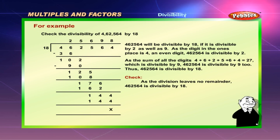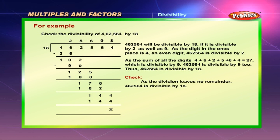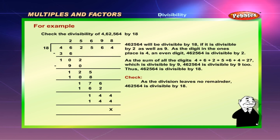Example: check the divisibility of 4,62,564 by 18. The number will be divisible by 18 if it is divisible by both 2 and 9. Since the digit in the ones place is 4, an even digit, 4,62,564 is divisible by 2. The sum of all digits is 4 + 6 + 2 + 5 + 6 + 4 = 27, which is divisible by 9, so 4,62,564 is divisible by 9 as well. Thus 4,62,564 is divisible by 18, confirmed since the division leaves no remainder.